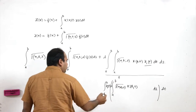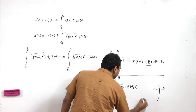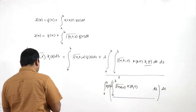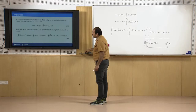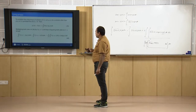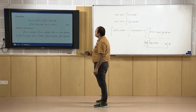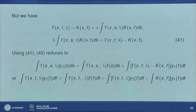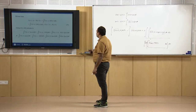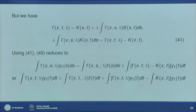The inner integral is the expression we are searching for. From the Fredholm relation, this value equals γ(x,t,λ) − k(x,t). So this integral can be replaced by γ(x,t,λ) − k(x,t).